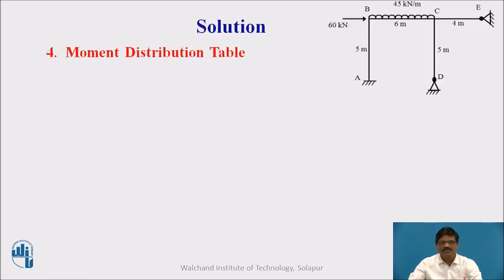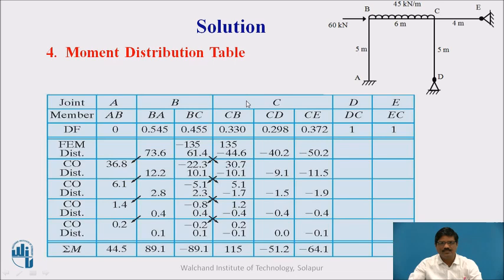Let us continue with the problem. Now the most important thing is this moment distribution table. We already determined the distribution factor of all the members and the fixed end moments. This is to be arranged in this table with joints A, B, C, D, E and the members.